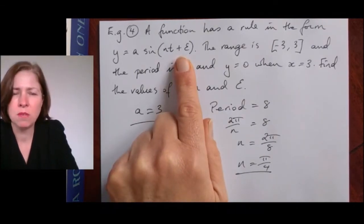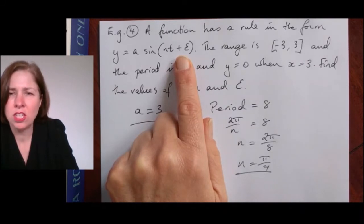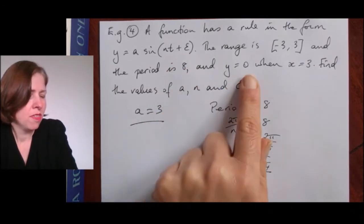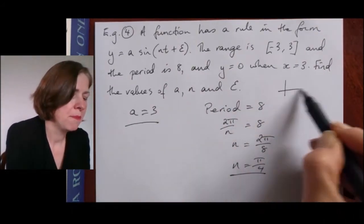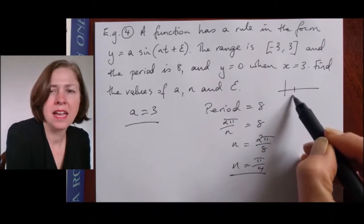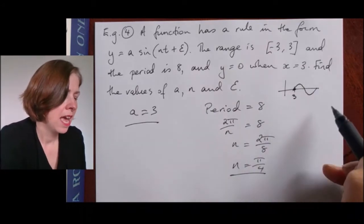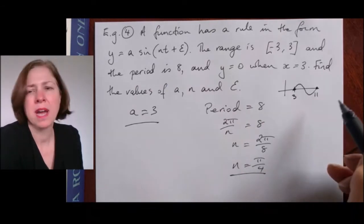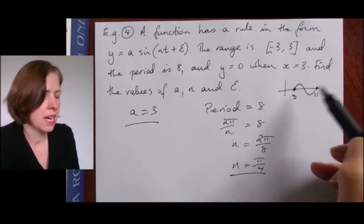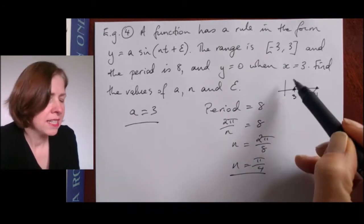There are actually two ways to go about finding epsilon and I'm going to show you both. The method I like is: I know that y is zero when x is three. So doing a quick sketch, three is going to be the starting point of my function. Because the period is eight, adding eight and three brings me back at eleven, giving another x-intercept.